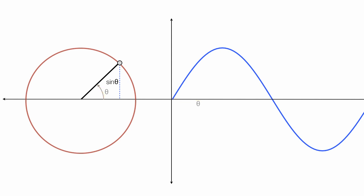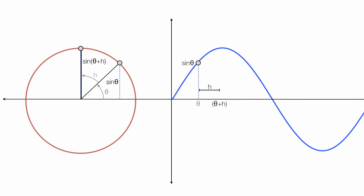The height is sine theta on the left, and it's also the height of the sine wave, so the height is sine theta as well. I'm going to add some additional distance, and I'm going to call that h. Then this new point is sine theta plus h. I'll take this new distance h and add it to theta, so I have theta plus h. That h distance is the same as over here to the left, and the height of the sine wave at that point is also sine theta plus h.